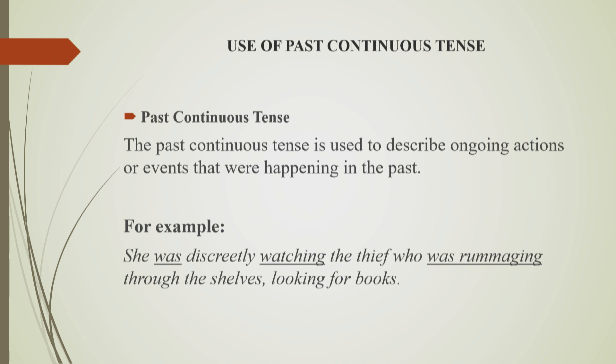We'll now have a look at the use of the past continuous tense. The past continuous tense is used to describe ongoing actions or events that were happening in the past. For example: 'She was discreetly watching the thief who was rummaging through the shelves looking for books.'